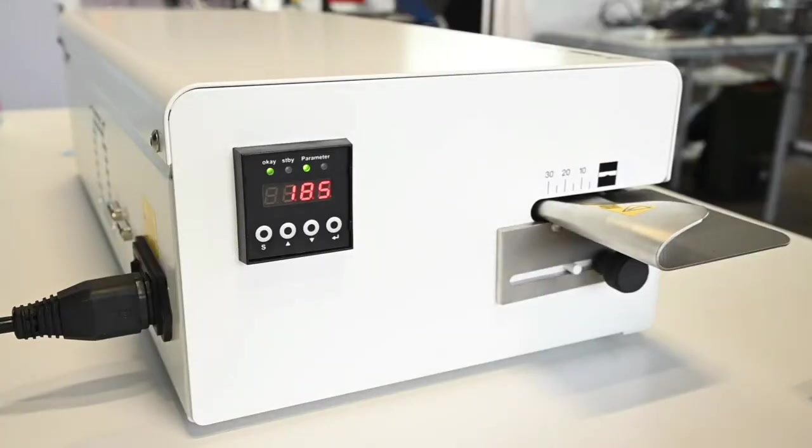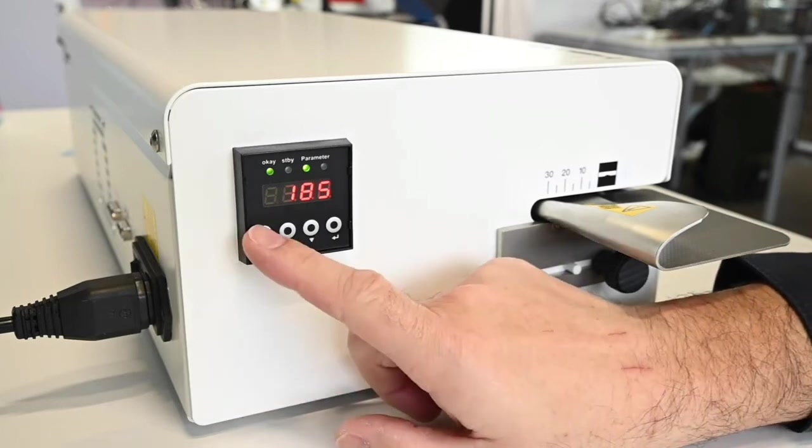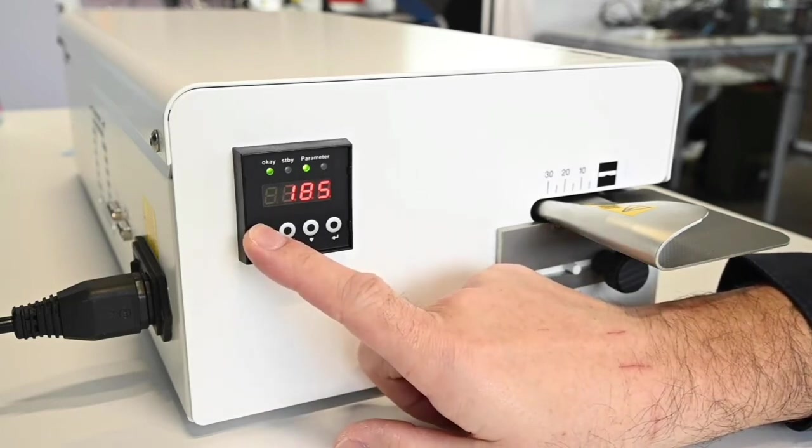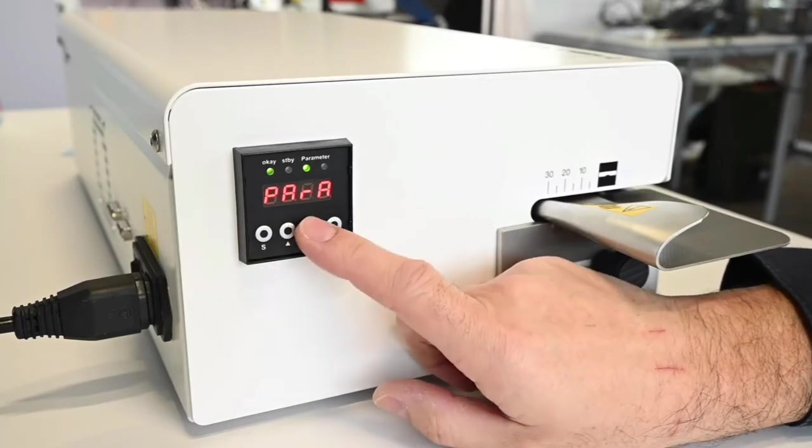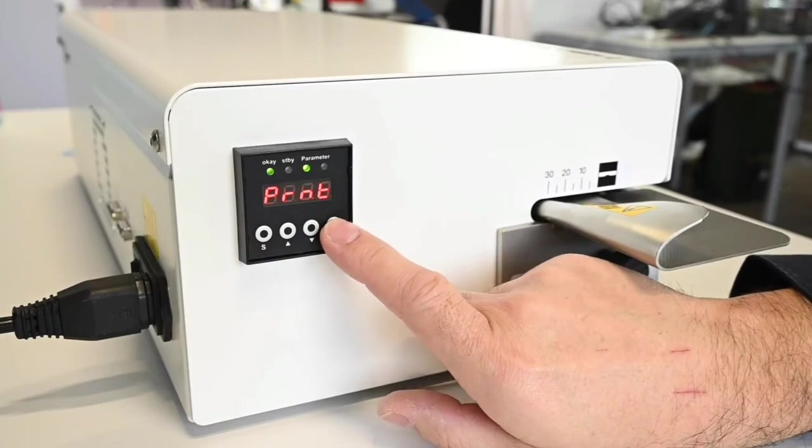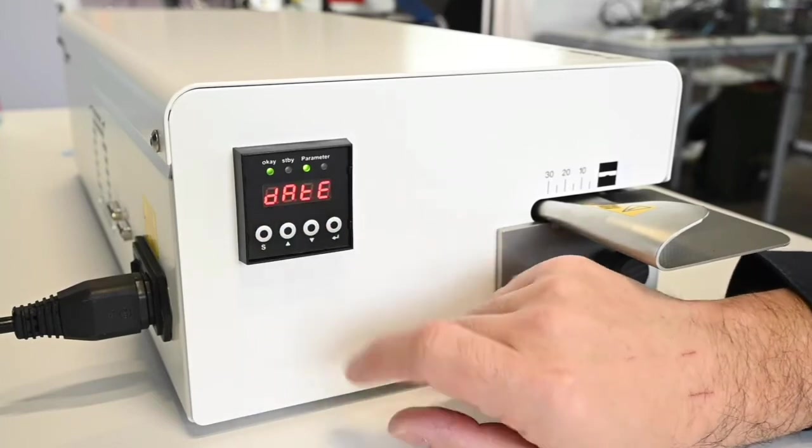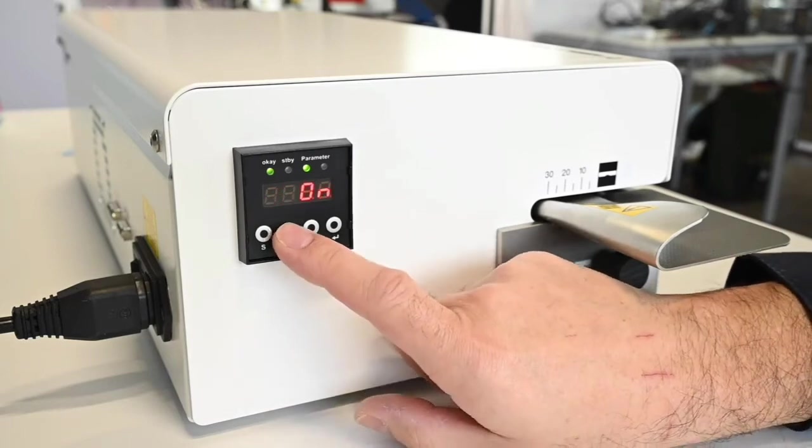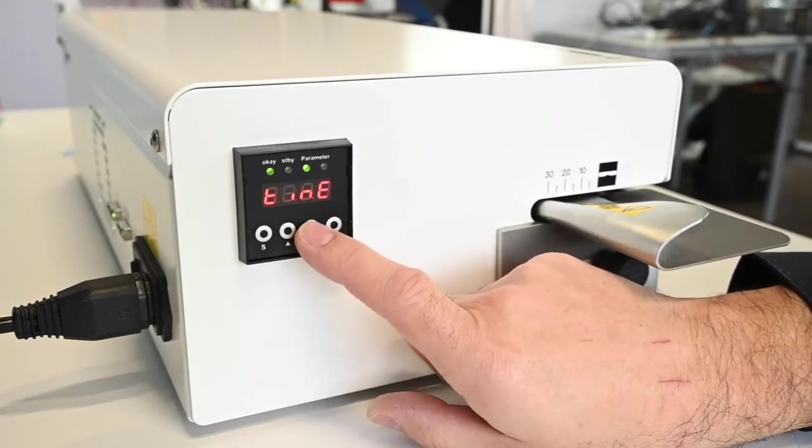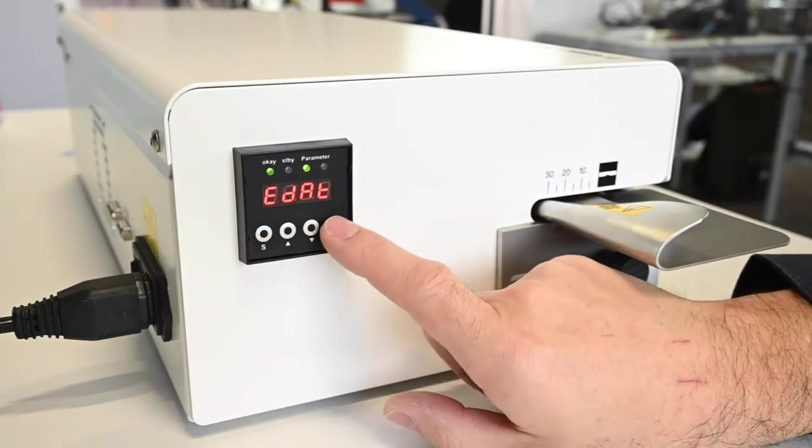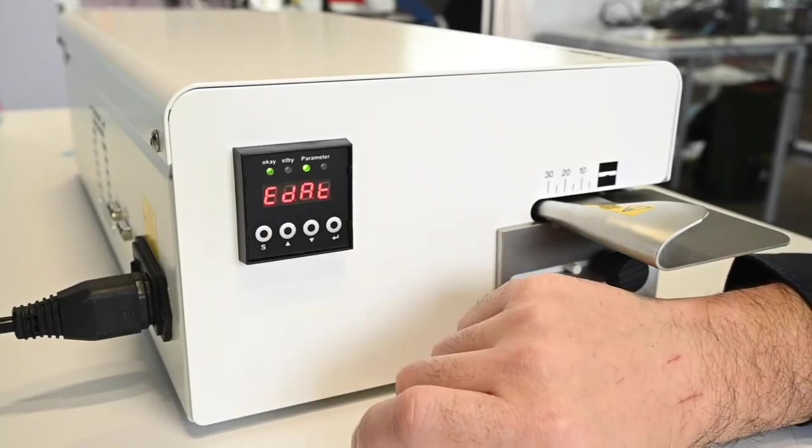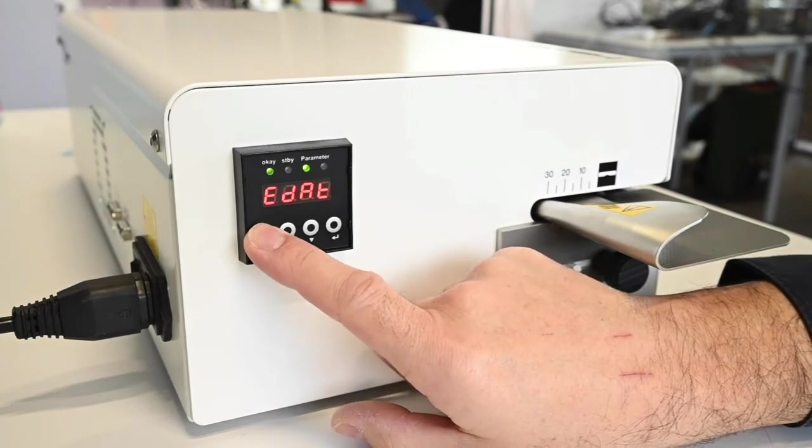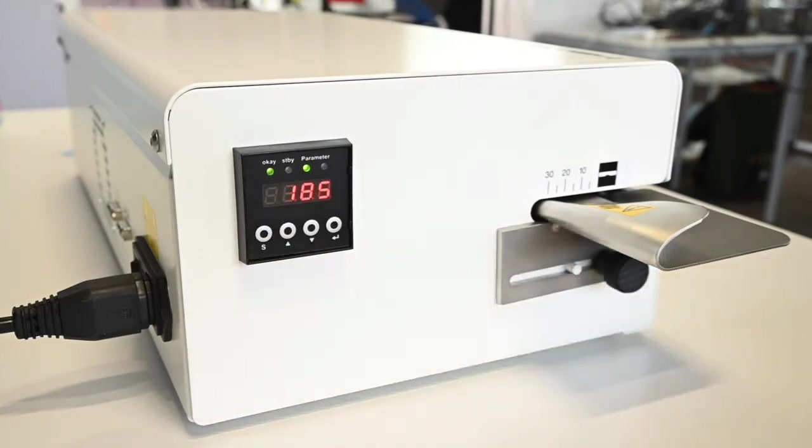Printer settings can be programmed easily and intuitively via printer menu. In our example we'll be using the printing function for today's date and switch it on, as well as the expiry date and switch it on. Once the values have been confirmed, all submenus can be exited. The machine is now ready.